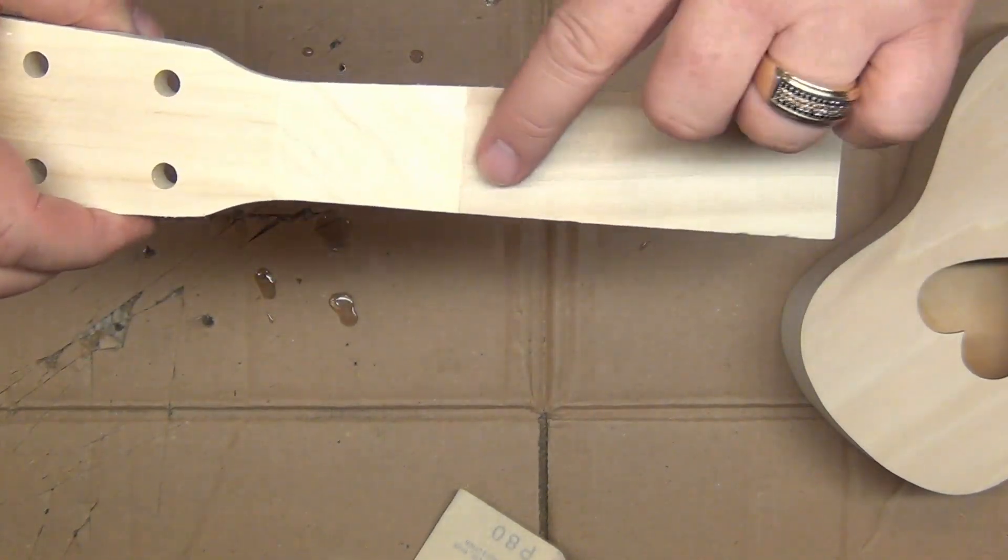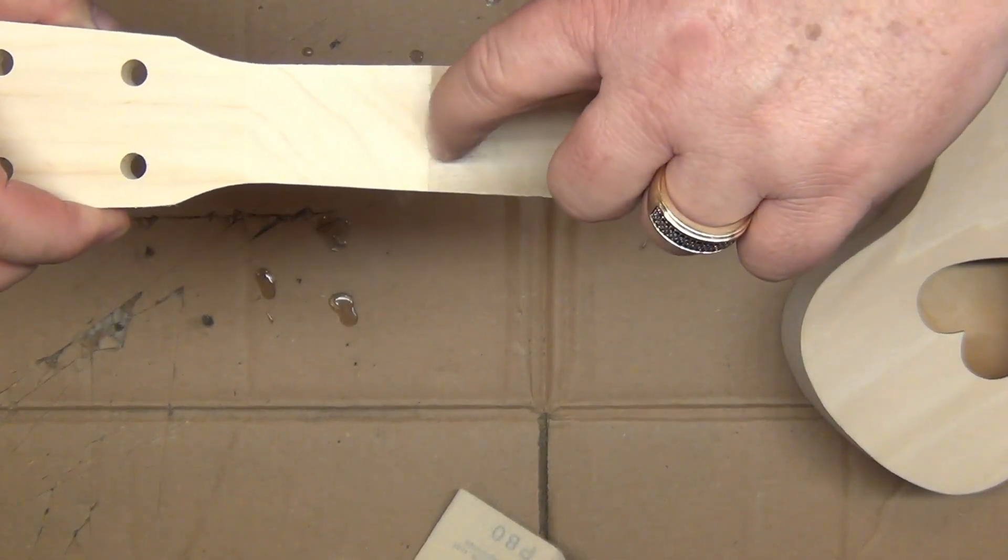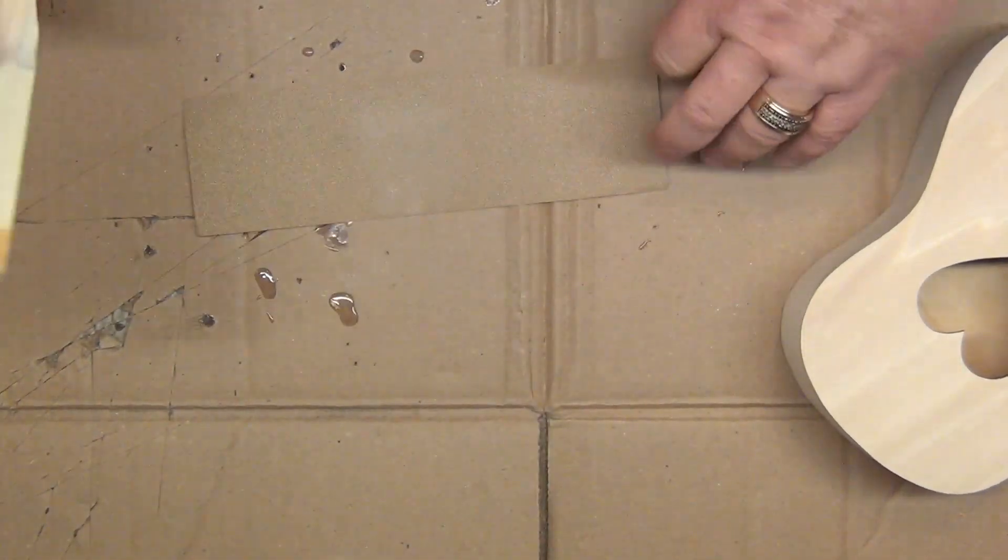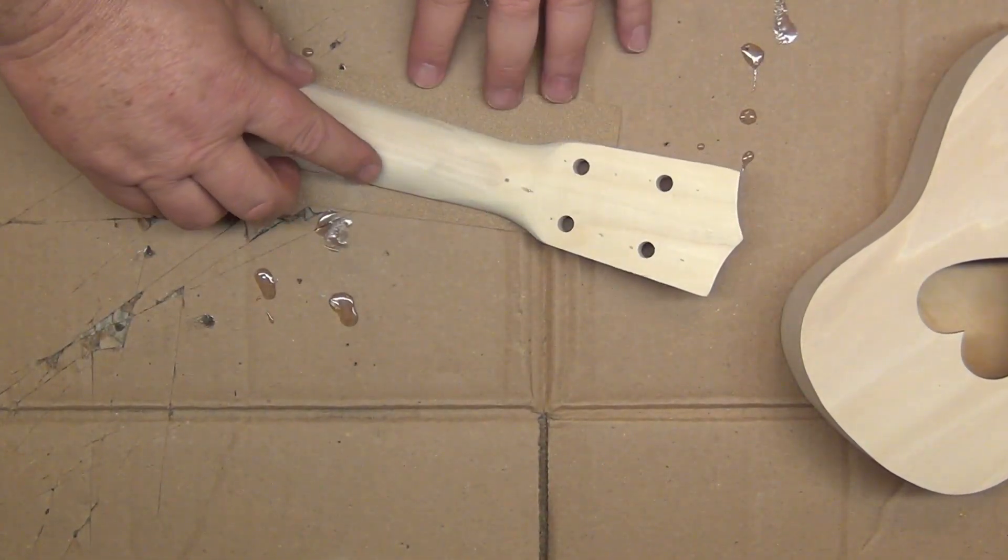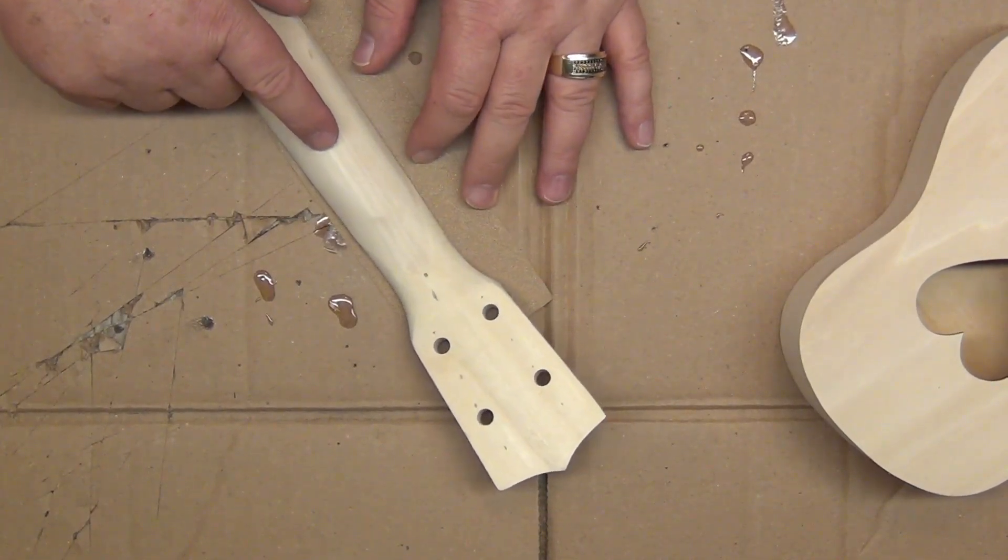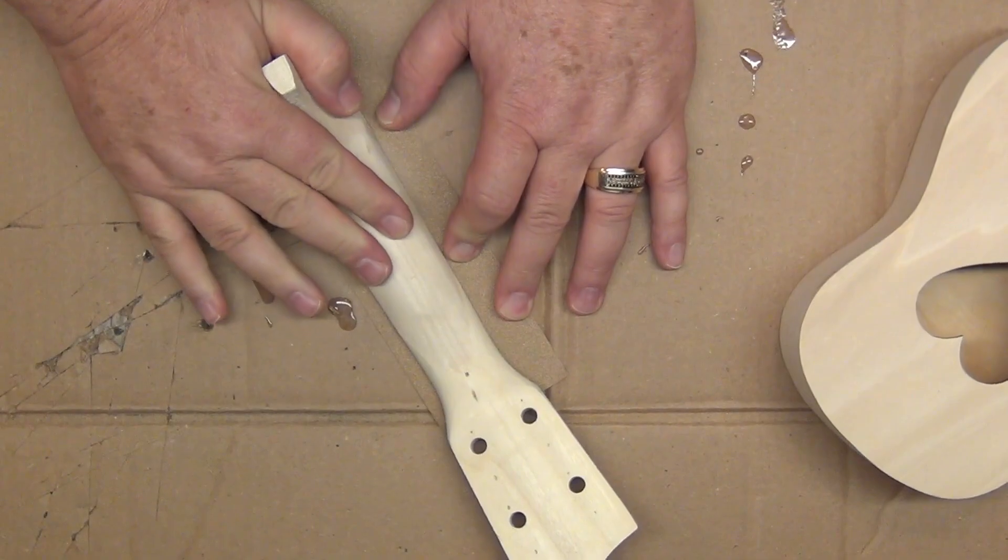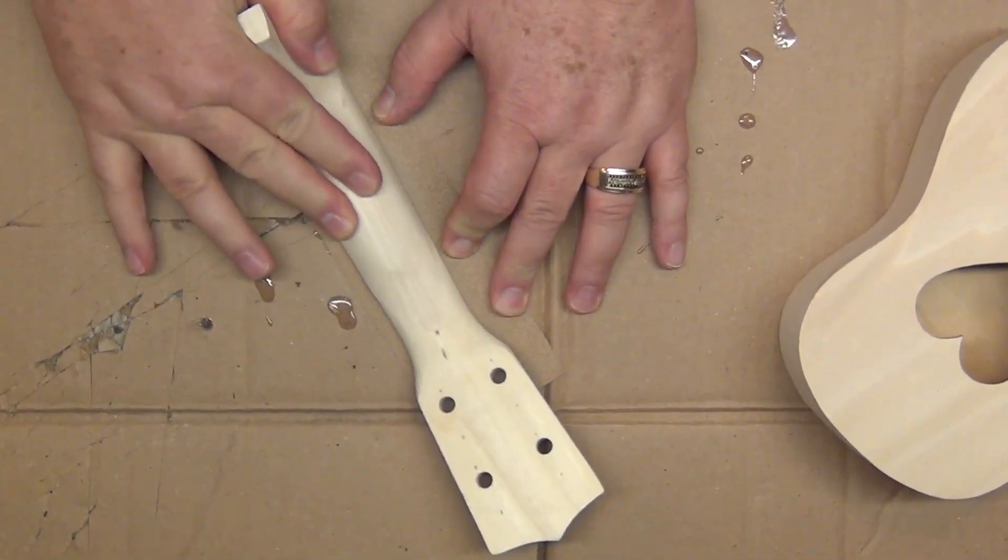Here you can see the neck is actually two pieces of wood where the fretboard goes. They were a little bit rough and I was afraid it might leave it a little bit lumpy, so I just took the same sandpaper, laid the neck down on it, and attempted to sand it smooth.